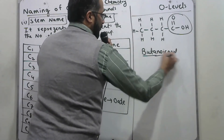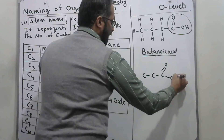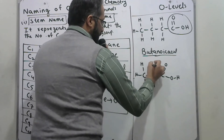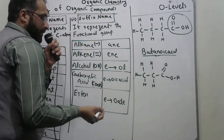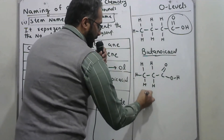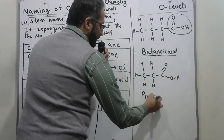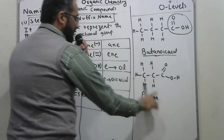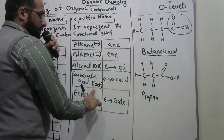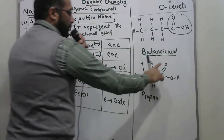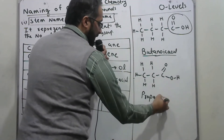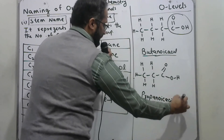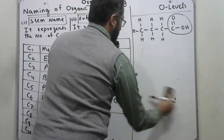This is very important: write the structural formula, count the number of carbon atoms. There are three carbons, so write 'prop'. The suffix for alkanes is 'ane', but since we have a COOH group (two oxygens with H), we replace 'e' with 'oic acid'. The name is 'propanoic acid'.